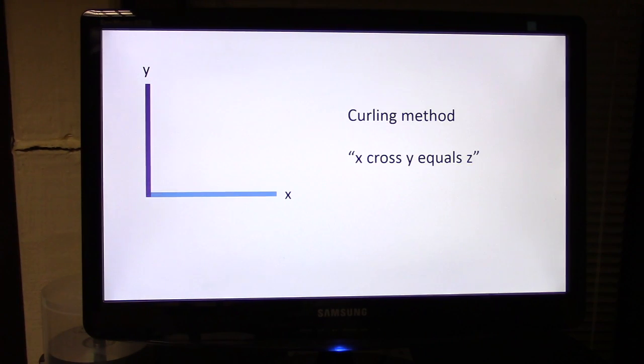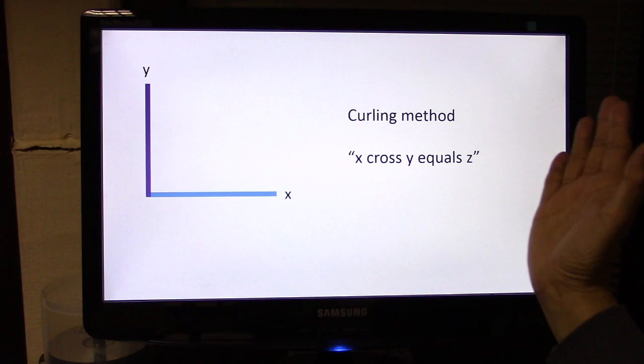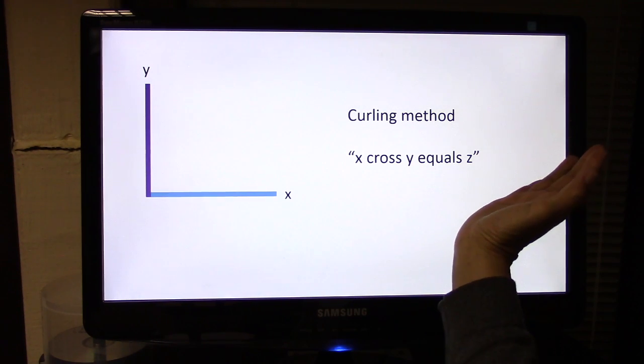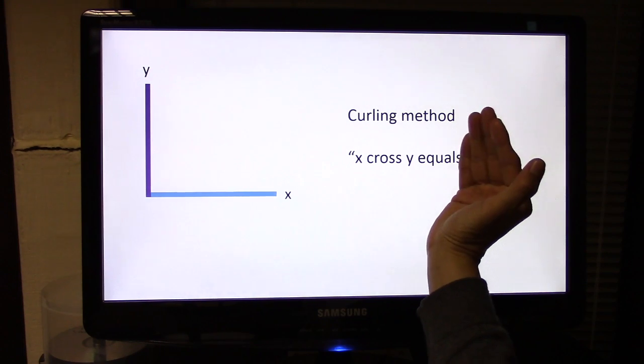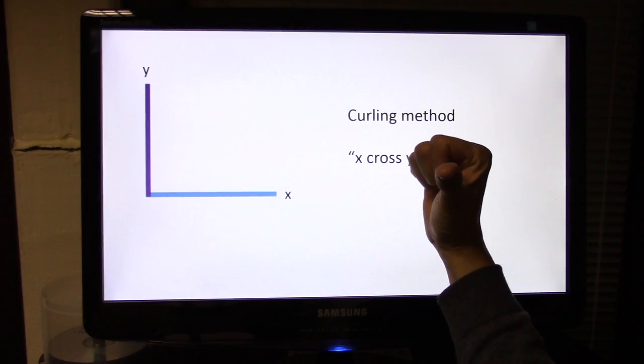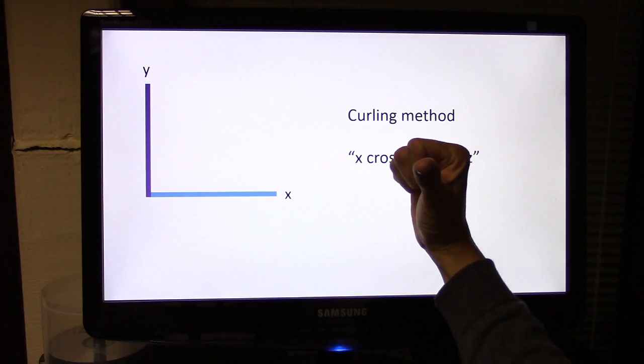Next method, the curling method. You can also use your right-handed curling method to figure out the orientation of Z. What you have to do is start with a flat hand, point it in the direction of X, and then cross it over to Y by flapping your fingers over to the Y, and then your thumb points out of the screen, and that's the direction of Z.